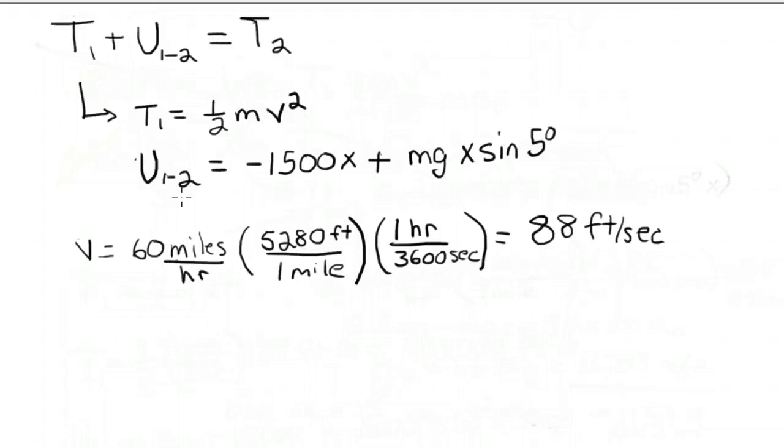Let's finish up our computation here. For T1, we have a half times the mass times the velocity squared. T1 is half. Now the mass was 4,000 pounds divided by 32.2 feet per second squared times the 88. And this, if you work this out, it works out to be 481,000 foot pounds.